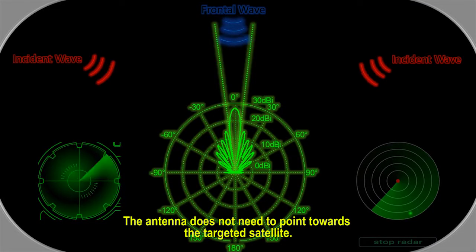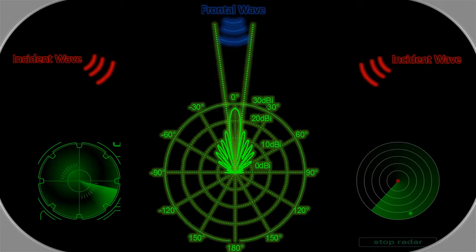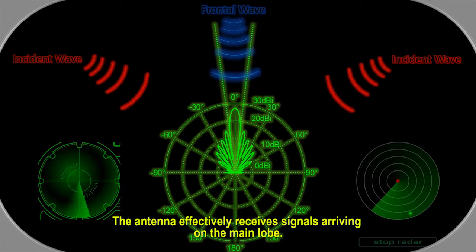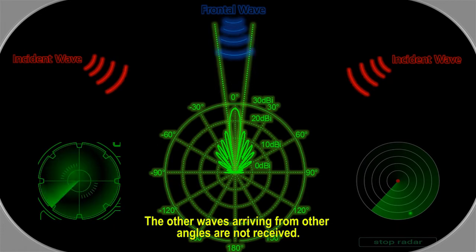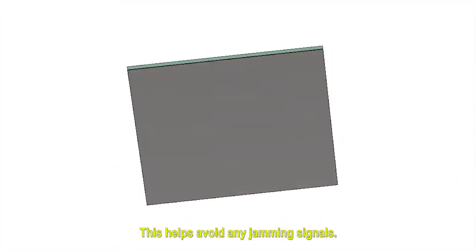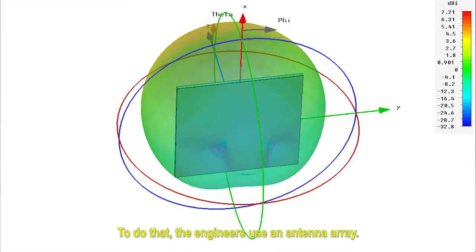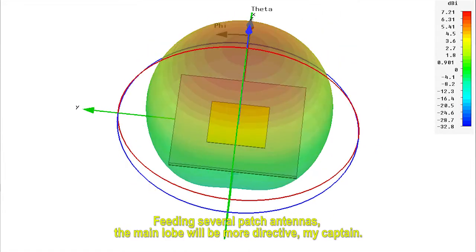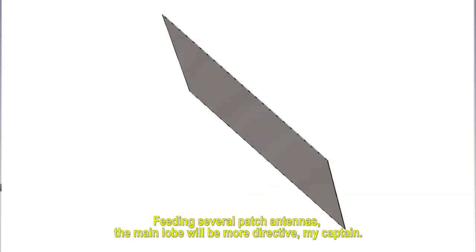The antenna does not need to physically point towards the targeted satellite. However, its radiation pattern must be directed towards the satellite. The antenna effectively receives signals arriving on the main lobe. The other waves arriving from other angles are not received. This helps avoid any jamming signals. To do that, the engineers use an antenna array — feeding several patch antennas so the main lobe will be more directed, my Captain.